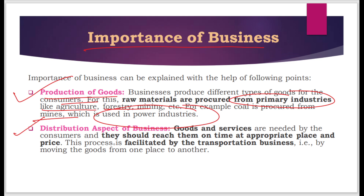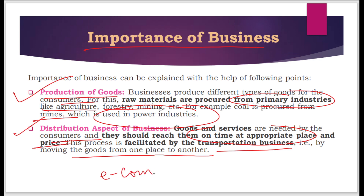Next is the distribution aspect of business. Goods and services needed by consumers should reach them on time, at an appropriate place, and at an appropriate price. This process is facilitated by the transportation functions of business — moving goods from one place to another. For example, on e-commerce websites like Amazon or Flipkart, we expect delivery in the minimum possible time. Distribution plays a key role in business.